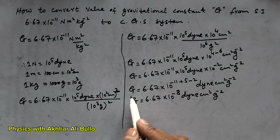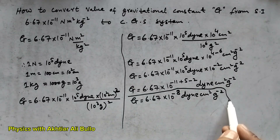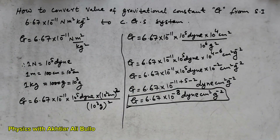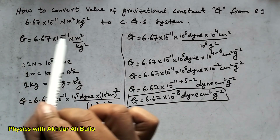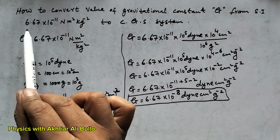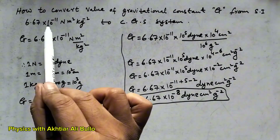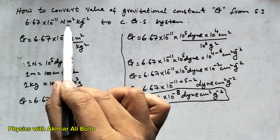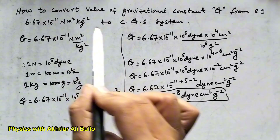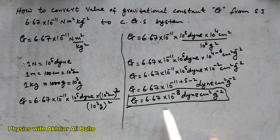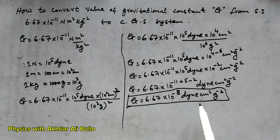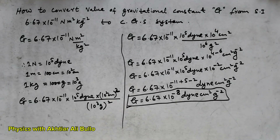So this is our required result. The value of G in the SI system is 6.67 × 10⁻¹¹ Newton meter squared per kilogram squared, and the value of G in the CGS system is 6.67 × 10⁻⁸ dyne centimeter squared per gram squared. That concludes the conversion of the value of the gravitational constant.